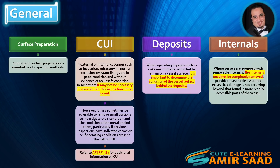If external or internal coverings, such as insulation, refractory linings, or corrosion-resistant linings are in good condition and without evidence of an unsafe condition behind them, it may not be necessary to remove them for inspection. However, it may sometimes be advisable to remove small portions to investigate their condition and the condition of the metal behind them, particularly if previous inspections have indicated corrosion or if operating conditions present the risk of CUI. Refer to API RP 583 for additional information on CUI.